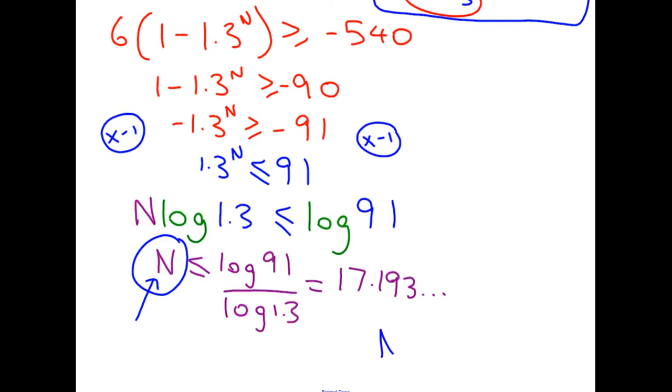So that means that n is the most you can do, which is 17. If you get up to 18, you've run out.